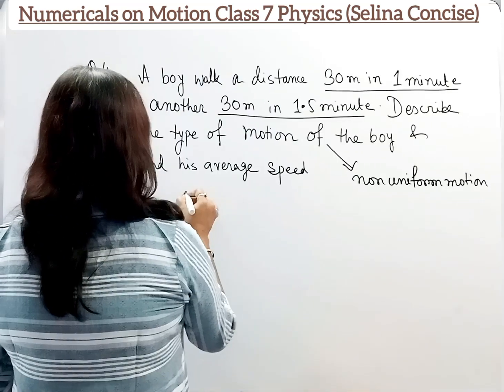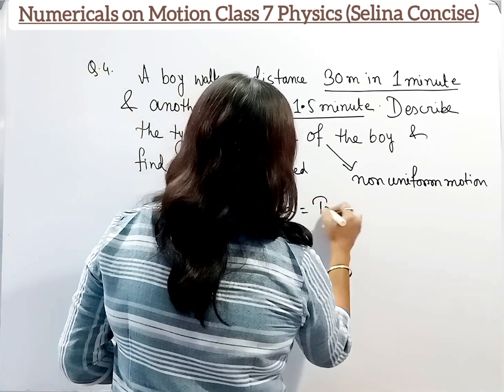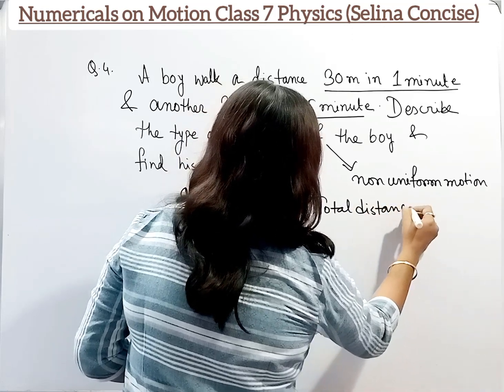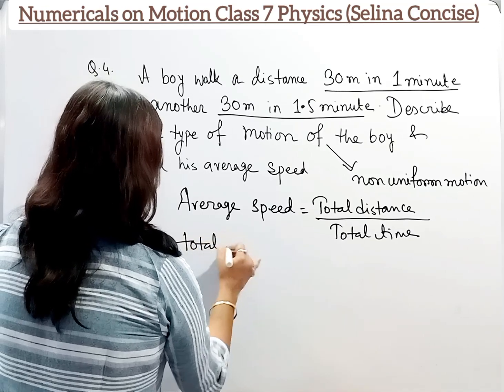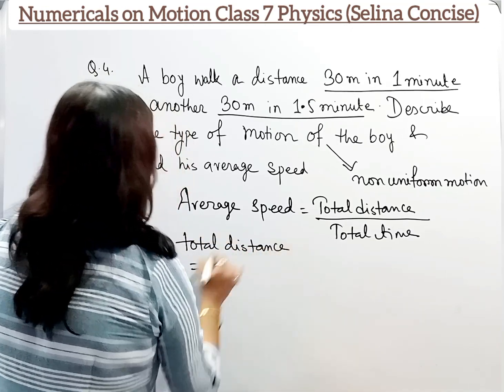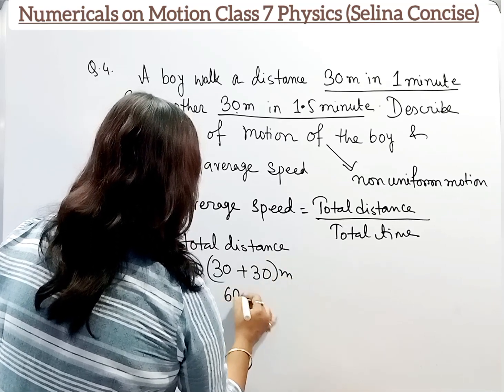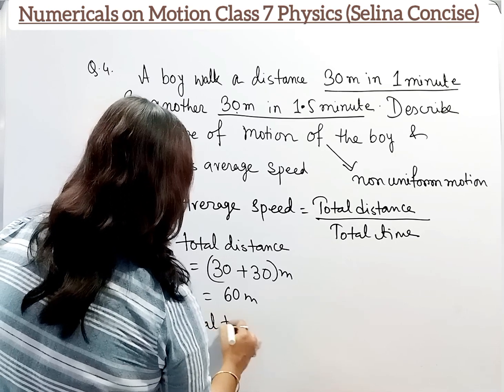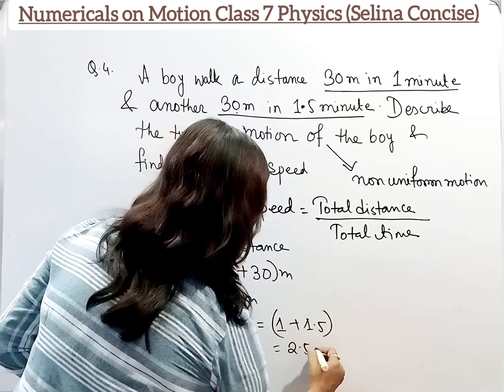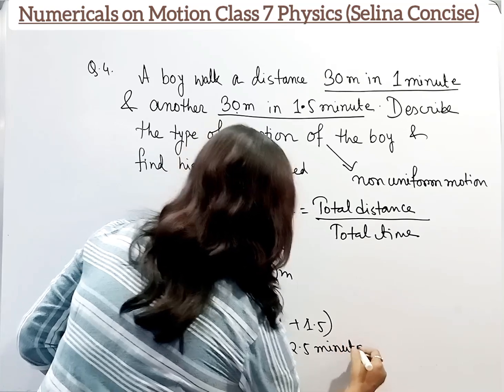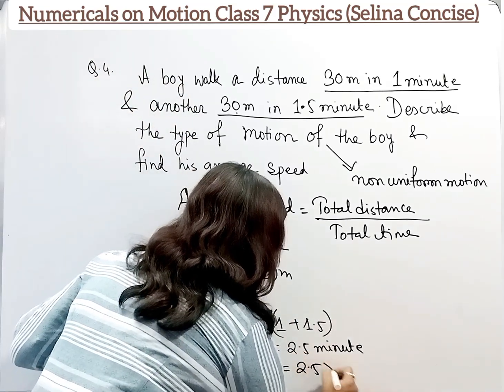Now find his average speed. Average speed equals total distance by total time. Total distance equals 30 plus 30 meters, that is 60 meters. And total time is 1 minute plus 1.5 minutes, that is 2.5 minutes. Since distance is in meters, we need to convert time to seconds. So 2.5 into 60.